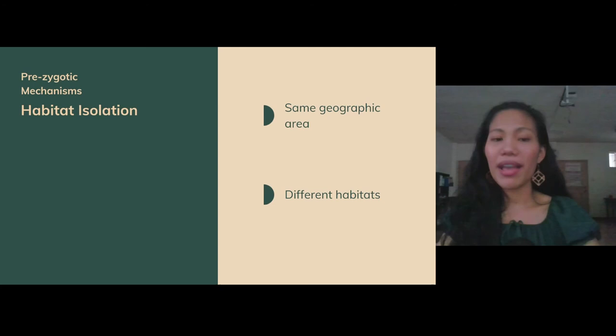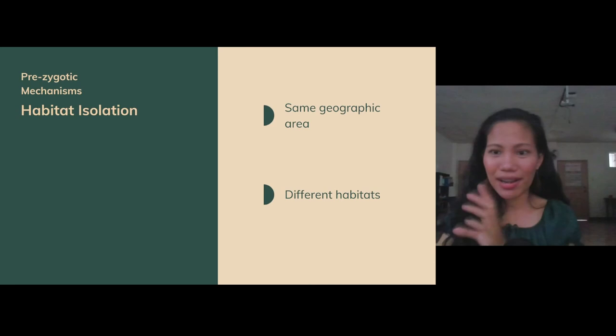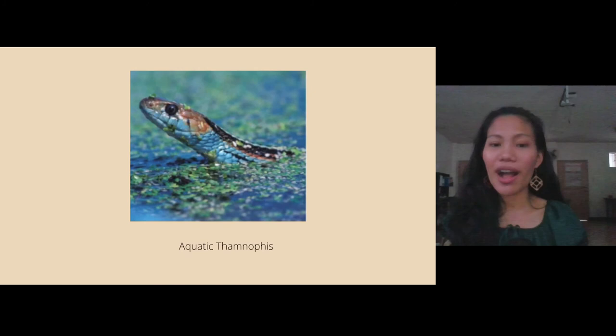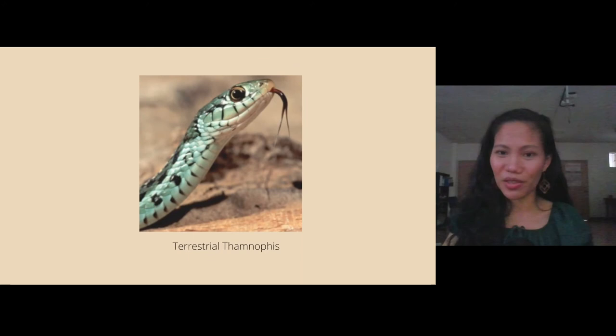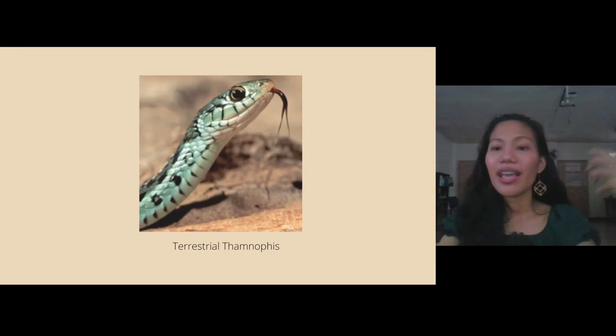Another type of prezygotic mechanism is habitat isolation. Note that the geographic area is the same here, but the habitats differ. One example is snakes — there are aquatic types and terrestrial types in the same geographic location. Because they occupy different habitats, interbreeding does not occur between them.